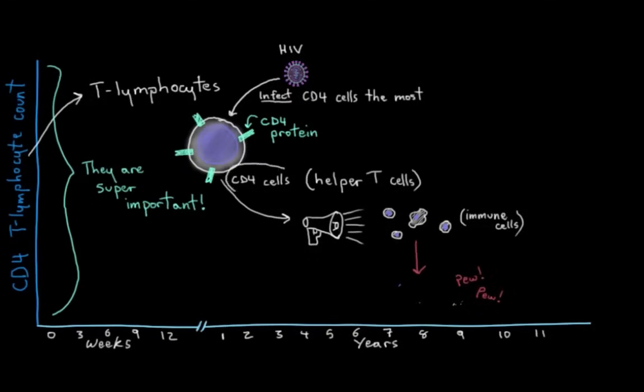These CD4 cells are kind of central. They're almost like little amplifiers of our immune system. Because HIV loves to infect and kill these cells, it completely disrupts how our immune systems function and renders it essentially useless.